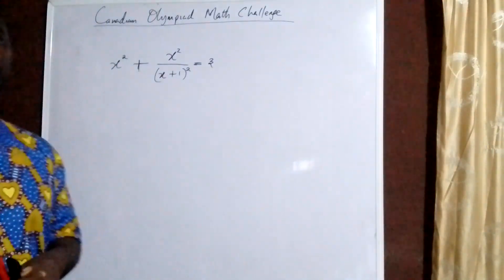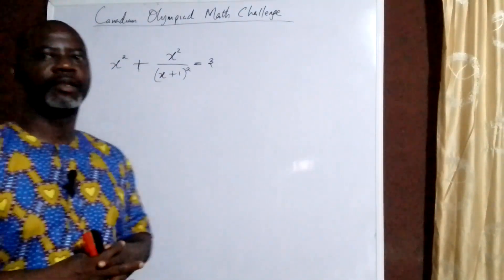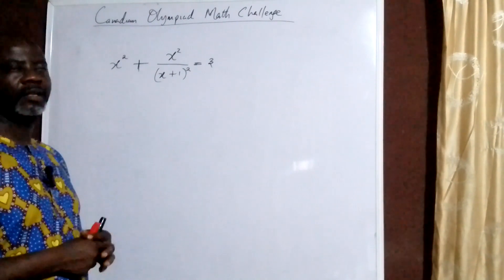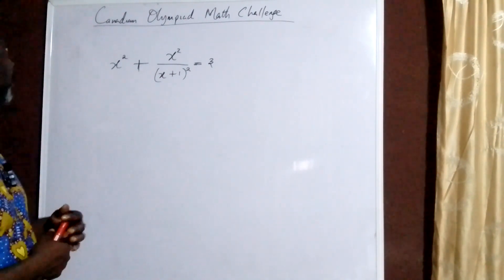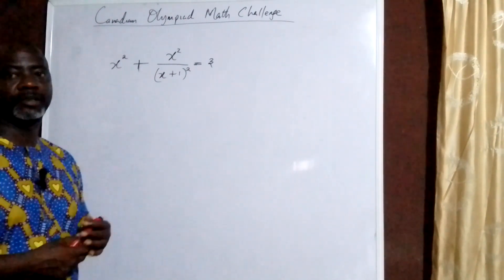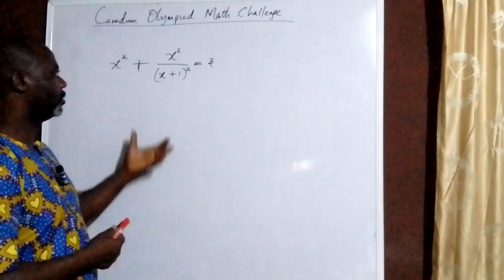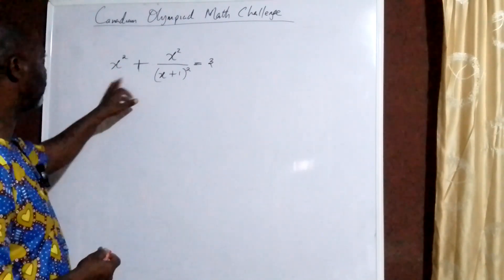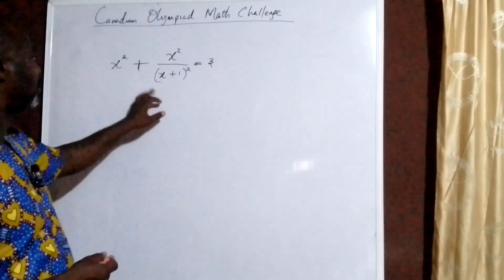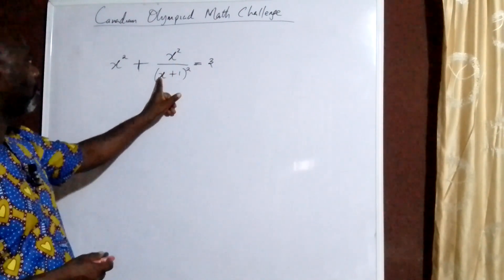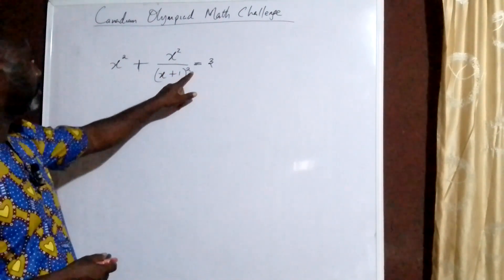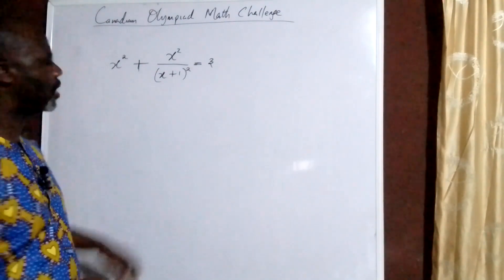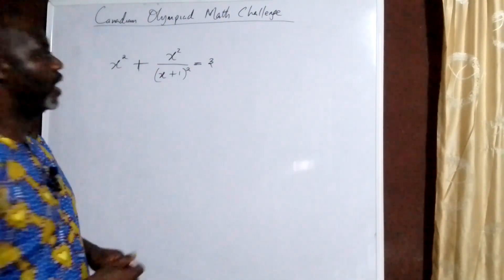Hello guys, welcome back to my YouTube channel. We are having a Canadian Olympiad Math Challenge. Let's look at how we solve the question: x squared plus x squared all over (x+1) squared, equal to 3. What are going to be the possible values of x?